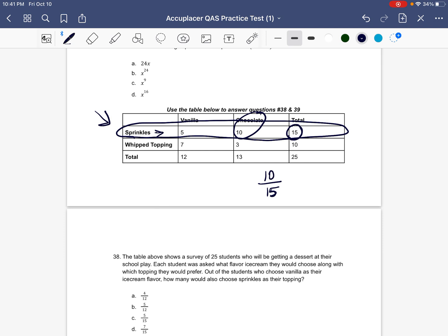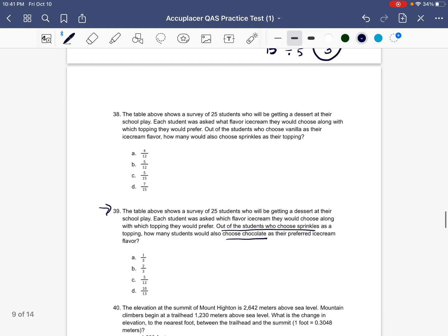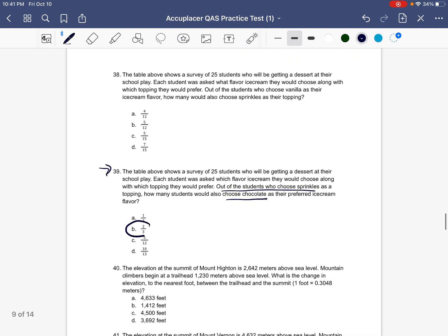10 out of 15 would be the fraction to represent the probability. But now we have to go ahead and reduce it. So we're going to divide the top and the bottom by the greatest common factor, which is 5. 10 divided by 5 is 2, 15 divided by 5 is 3. So 2 over 3 would represent out of the students who chose sprinkles who also chose chocolate. So the answer to 39 should be 2 over 3, which is B.